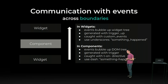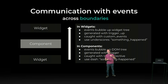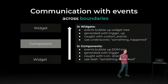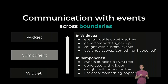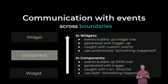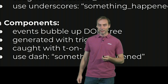OWL components use a unified communication system — simply native events that bubble up the DOM tree. Those events are generated with triggers and caught with event listeners added by the T-ON QWeb directive. They use dashes to separate words. What we need is a way to remap those events: a custom event gets converted to a DOM event, then converted back to a custom event. This is critical because your field widget will not work if those events are not properly handled.